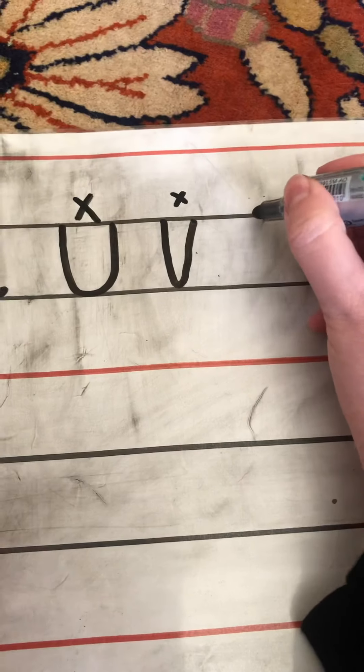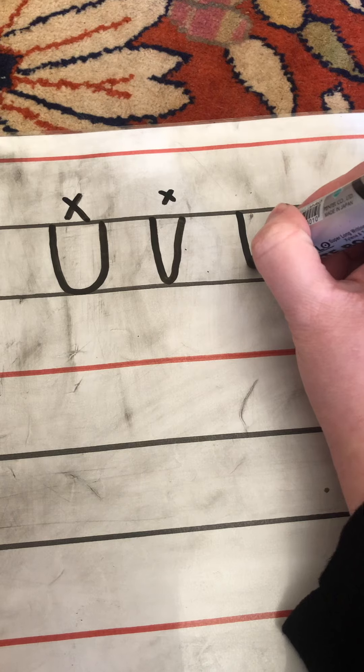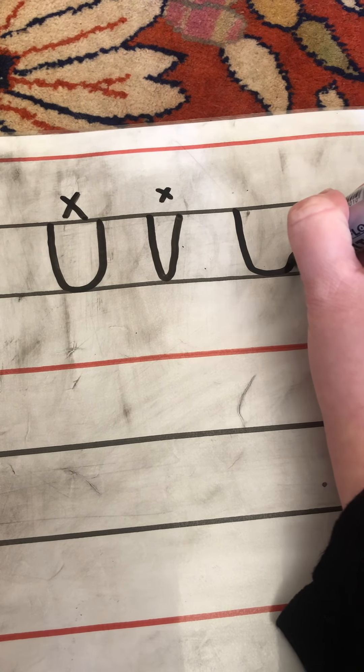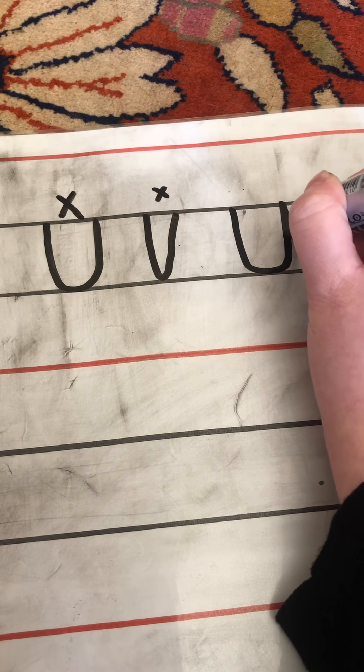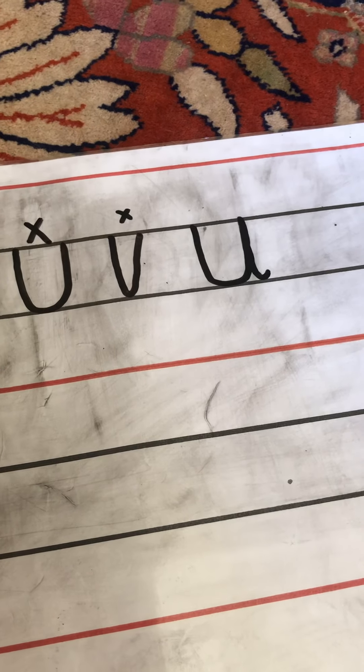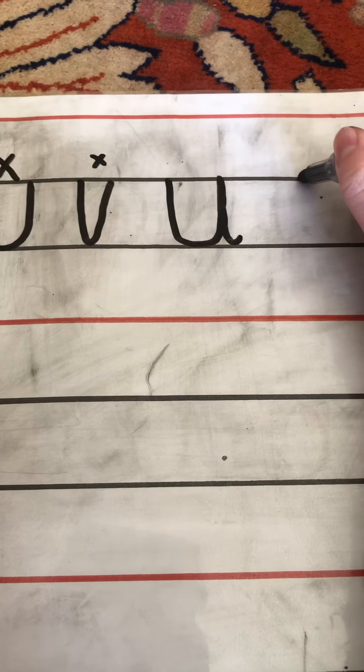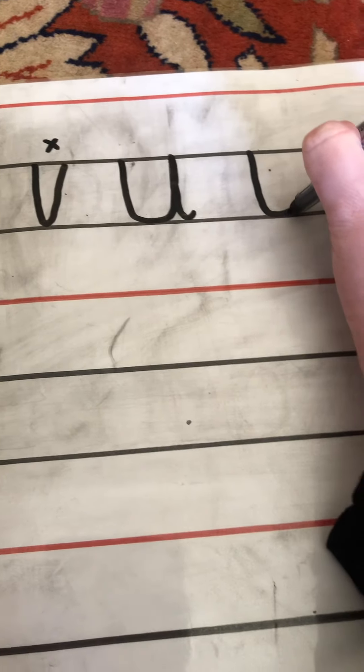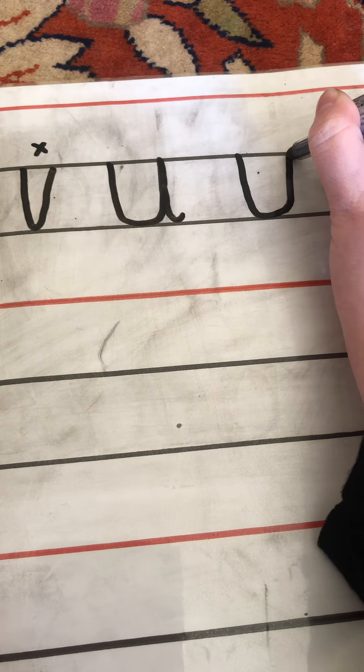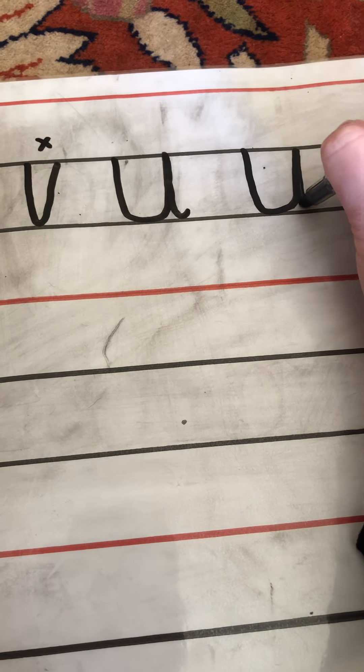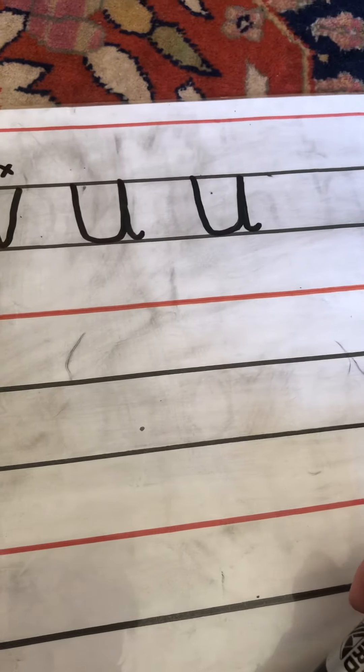So it starts at the top and it goes down, curves round, goes up the umbrella and back down to the puddle. And it's called a smile family letter because it looks like a smiley face. So when you're writing it you can imagine that you are drawing a smiley face and then finish it off with a puddle like that.